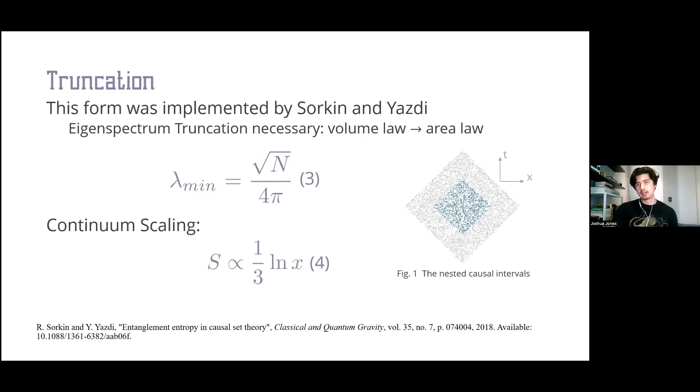Once we solve this equation in which w is the wave function and i delta is the Pauli-Jordan function, we can use the eigenvalues and put them into equation 1 to retrieve the entanglement entropy. When Sorkin and Yazdi implemented this in a causal set framework, they considered a nested causal interval shown in figure 1. They found they got a volume law and needed to truncate the spectrum of the Pauli-Jordan function, removing eigenfunctions corresponding to eigenvalues smaller than root n over 4π. They then retrieved the expected area law scaling.